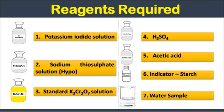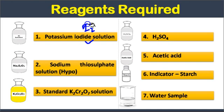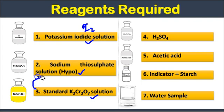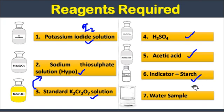The reagents required in this titration are: potassium iodide solution, which serves as the source of iodine; sodium thiosulfate solution (hypo solution), used as the intermediate solution; standard potassium dichromate solution, used to standardize the hypo solution; two acids — H₂SO₄ and acetic acid; starch indicator, which is an adsorption indicator; and finally the water sample.